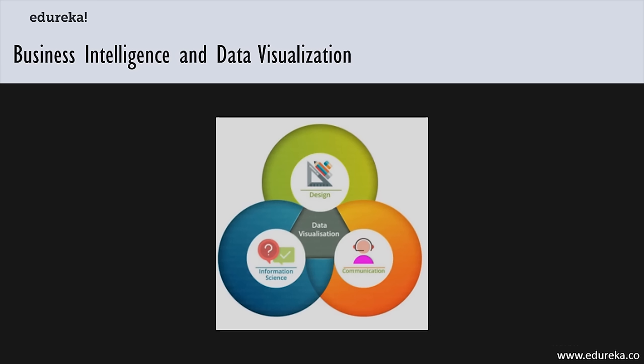The way the human brain processes information makes it easier to use images, charts, and graphs to understand and visualize large amounts of complex data than going through tons of spreadsheets and reports. As the saying goes, an image is worth a thousand words. As a human mind, images aren't just a collection of pixels — they hold a lot of information that is easier to understand in visual form than in text or number form.